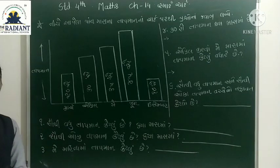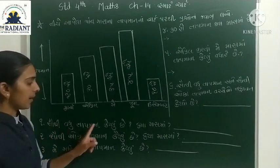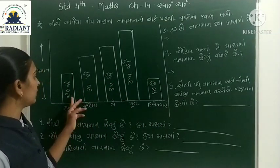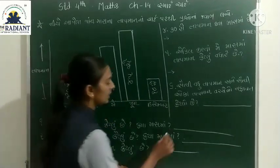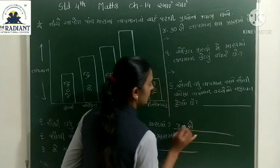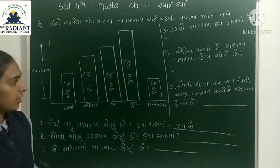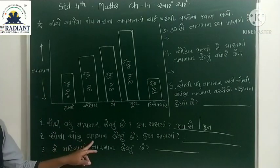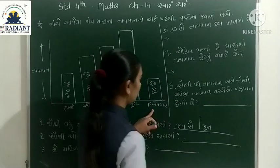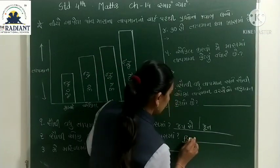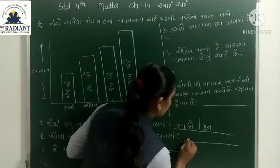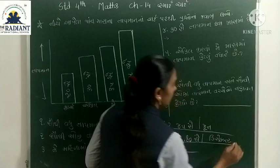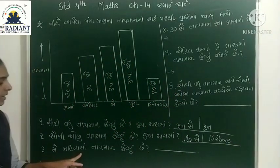પ્રશ્ન એક: સૌથી વધુ તાપમાન કેટલું અને ક્યા માસમાં છે? તો સૌથી વધુ તાપમાન 45 સેલ્સિયસ જૂન માસમાં છે. પ્રશ્ન બે: સૌથી ઓછું તાપમાન ક્યાં છે? તો સૌથી ઓછું તાપમાન ડિસેમ્બરમાં છે.